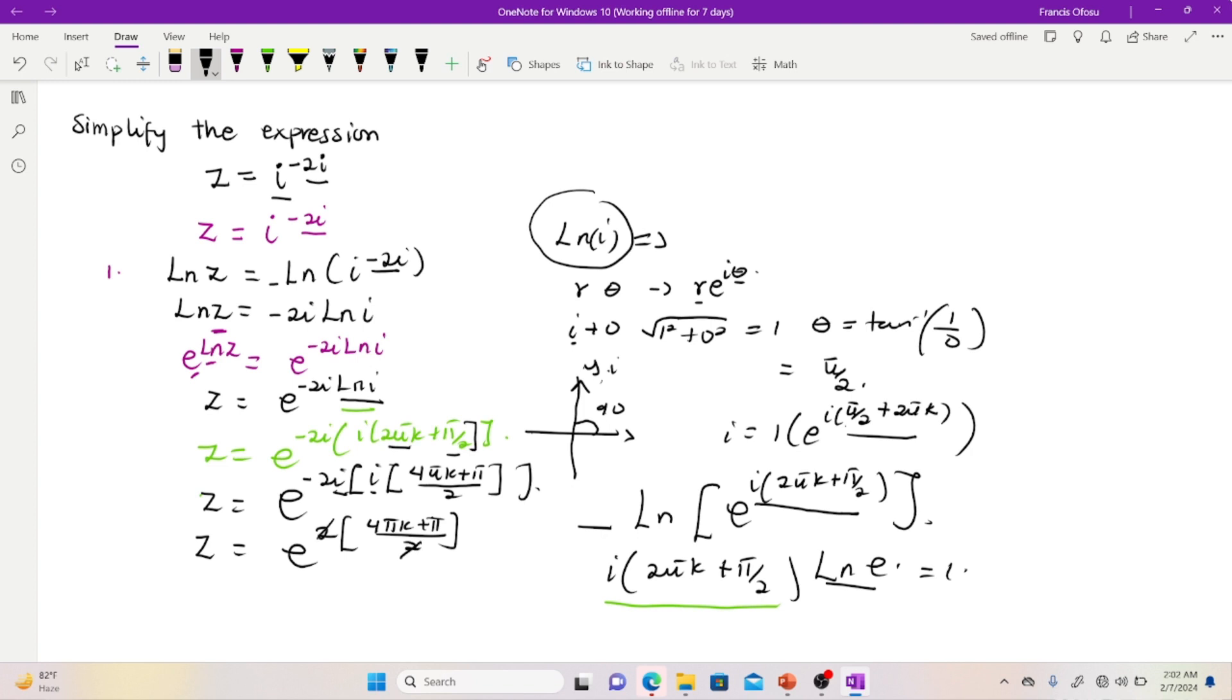So these two simply cancel this out. Hence, our z is equal to e to the power 4πk plus π. And this is simply the solution.